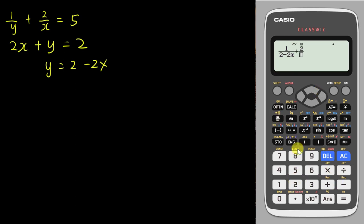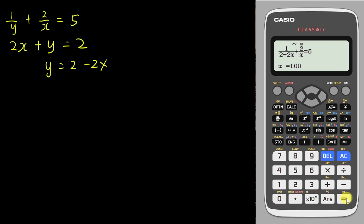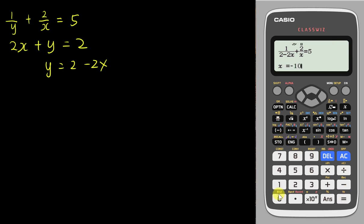Let me show you: type 1 over (2 minus 2x) plus 2 over x, then use alpha-equal to get = 5. Press Shift Solve. The calculator shows the previous answer — enter 100, and it gives 0.5. Press equal again and enter negative 100, and the calculator still gives 0.5. In reciprocal form, the calculator can only find one of the answers.